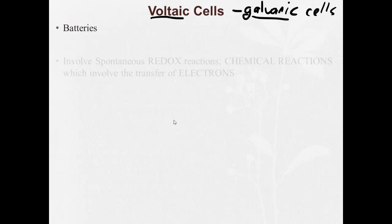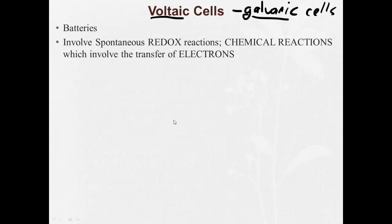Voltaic cells are basically batteries. Now, sometimes they'll be referred to as galvanic cells. So voltaic and galvanic can be used interchangeably. But basically, a voltaic cell is a battery, and it involves a spontaneous redox reaction.